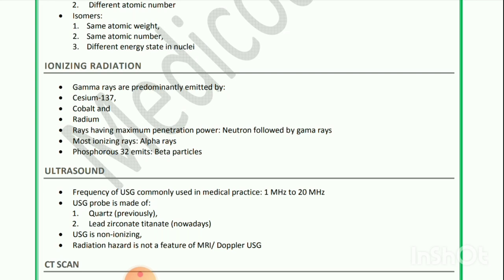Ionizing radiation: Gamma rays are predominantly emitted by cesium-137, cobalt, and radium. Rays having maximum penetration power are neutrons, followed by gamma rays. Most ionizing rays are alpha rays. Phosphorus-32 emits beta particles.